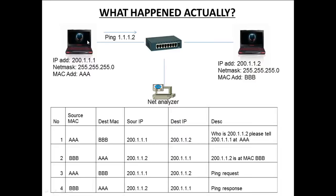For example, the first computer on a subnet with the IP address 200.1.1.1 might ask who has the IP address 200.1.1.2, because they have a packet of information that needs to be routed to them. When the machine with the IP address 200.1.1.2 receives the broadcast request, it then transmits back an ARP reply with its MAC address. This is how ARP works.